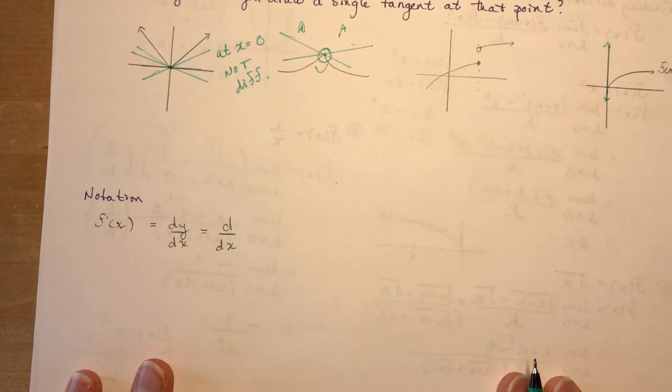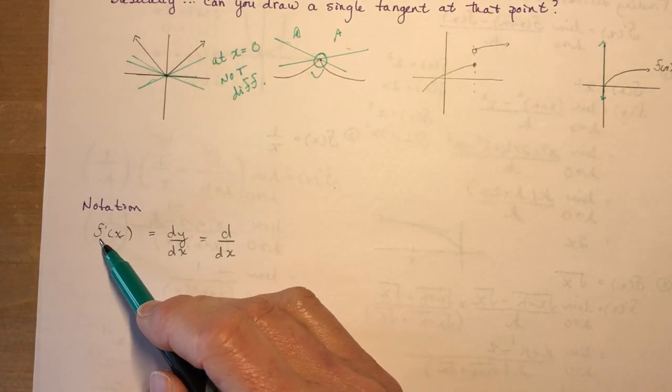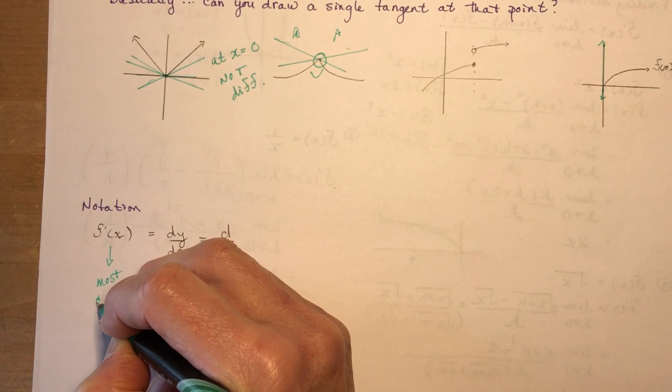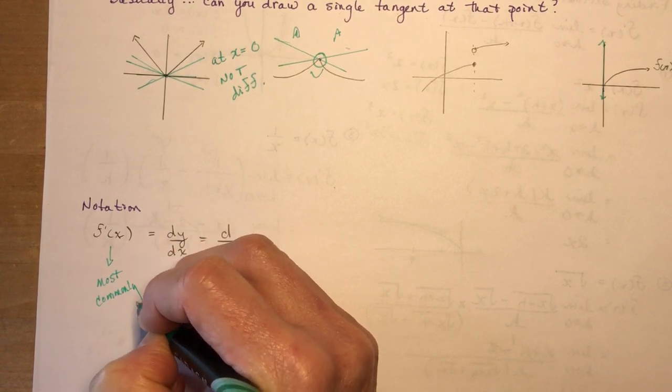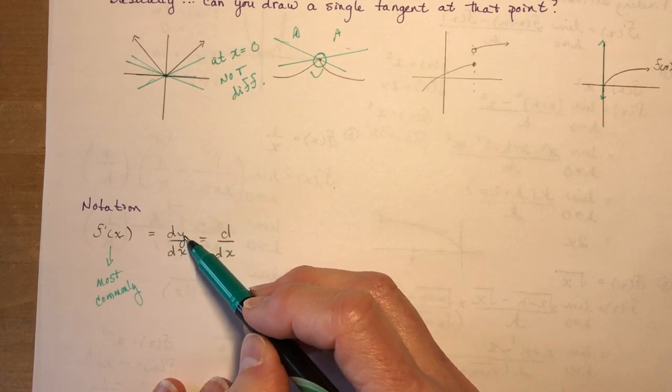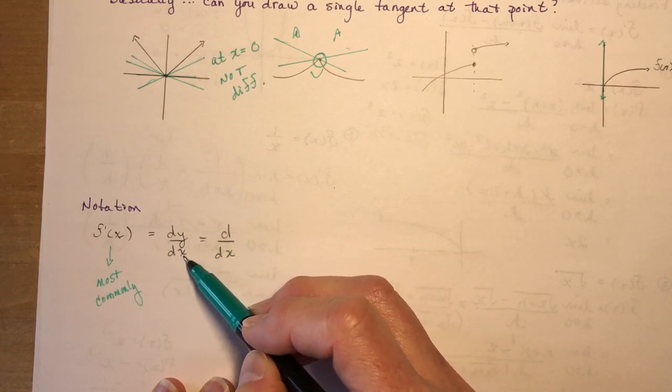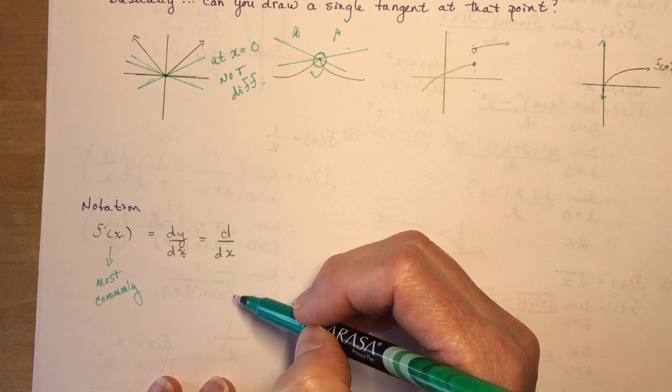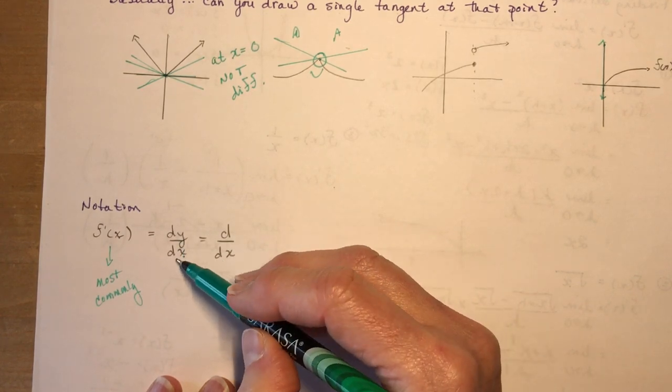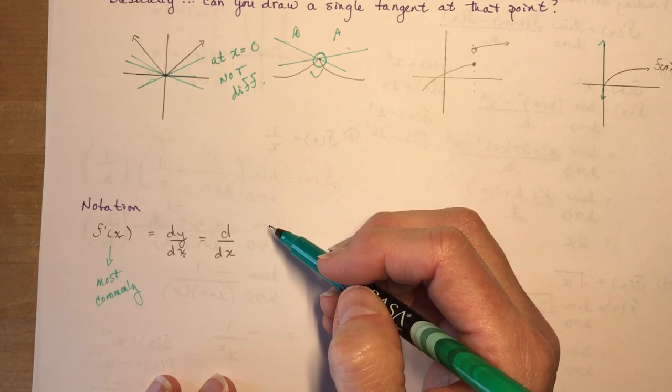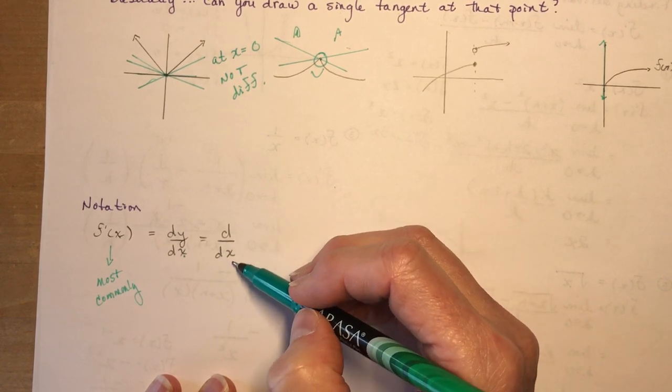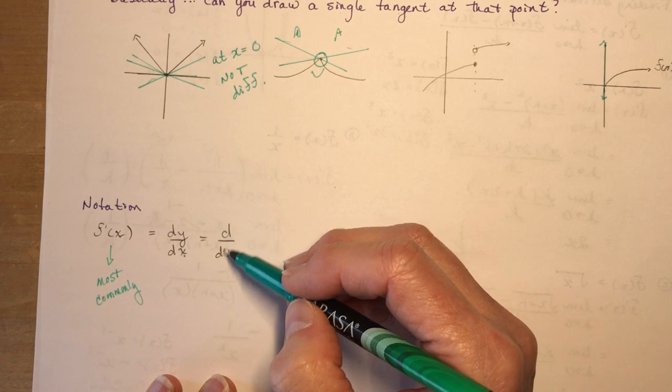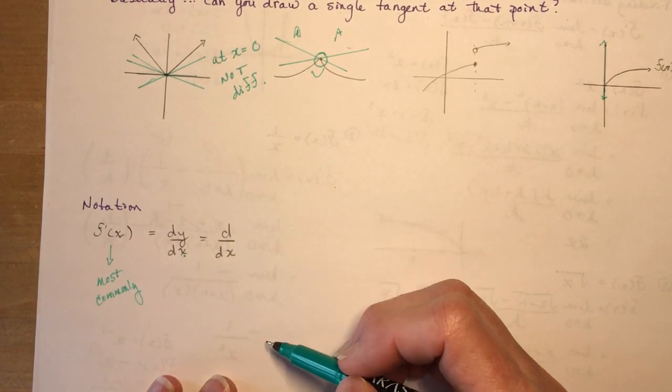Now, the final thing we're going to talk about is notation. We use the prime function, f prime of x. This is the most commonly used. And some textbooks, especially the older ones, they write dy dx. That means the derivative of y with respect to x. Math is very respectful. Or d dx, which also means the derivative with respect to x. Now, of course, if you had different variables, you'd change them here. So let's say I had an equation that was s squared. So dds. Or that would be for a position function. Or ddt or ddv or could be all sorts of different letters.